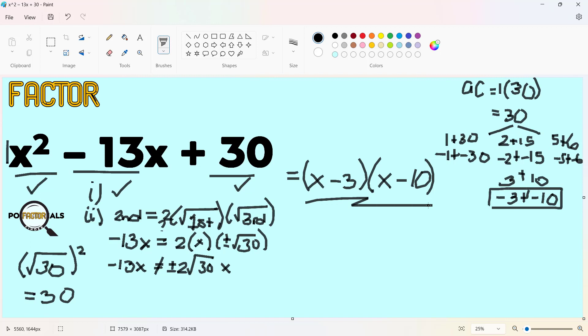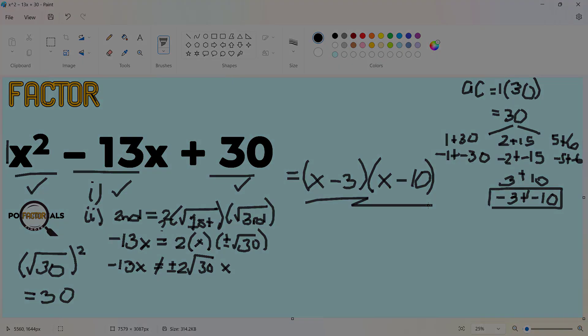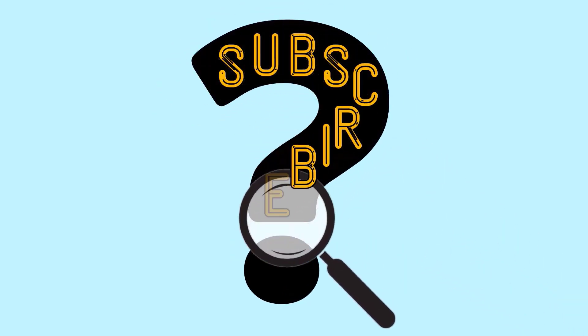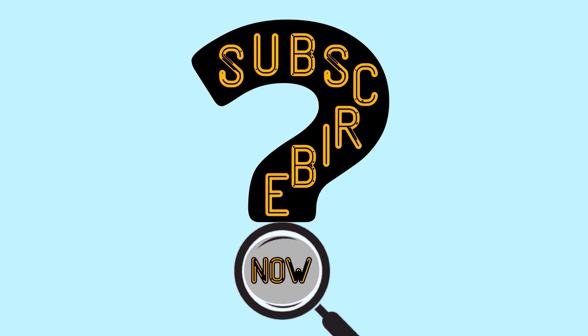So, we did this by AC way method, because we are sure that it's no longer a perfect square trinomial, because it doesn't satisfy the first and the second condition of a perfect square trinomial. The next factor we're looking for is for our next subscriber. Subscribe now!